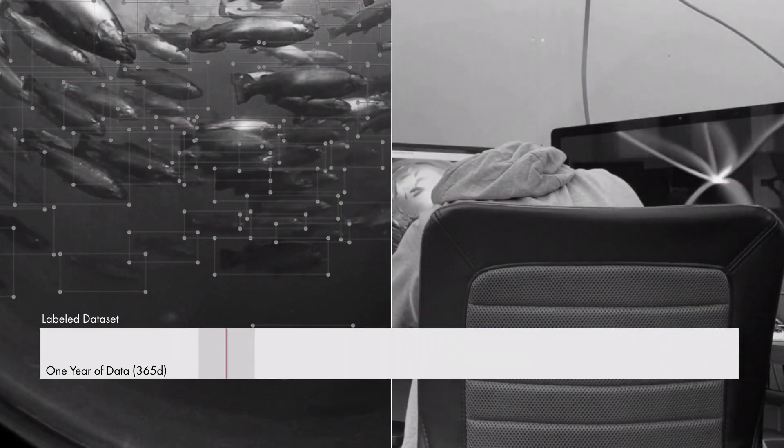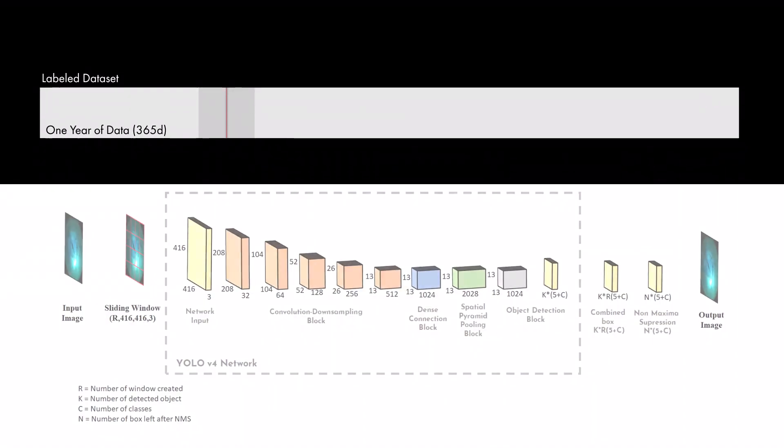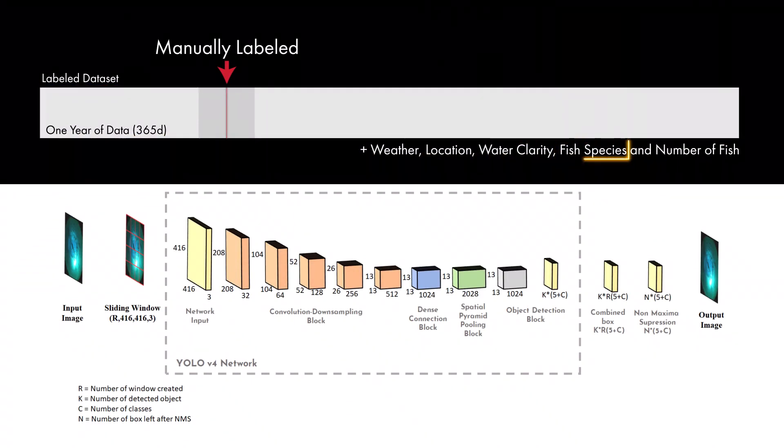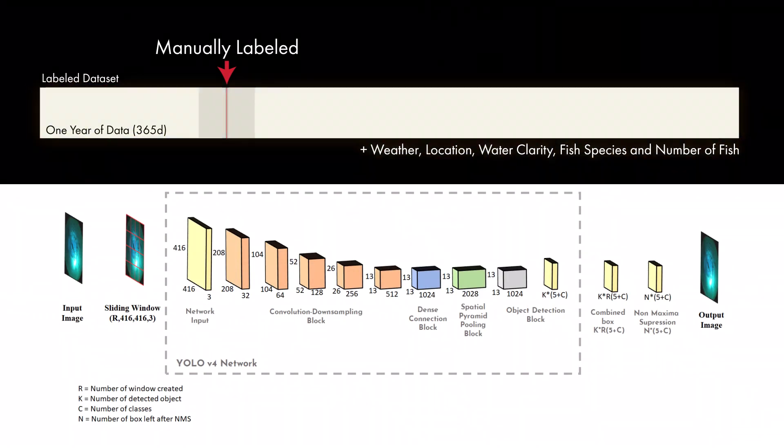In order to fully train robust and accurate computer vision models, a large training dataset containing many variations in weather, time, location, water clarity, fish species, and number of fish is required.